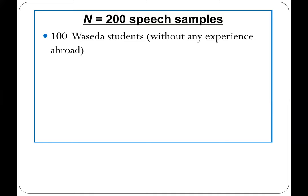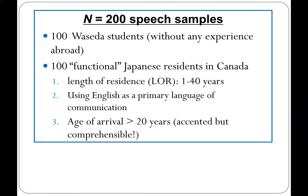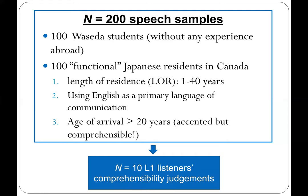The first hundred speakers came from my own university students back in Japan — they had never been abroad. The other hundred participants came from Japanese residents in Canada, chosen specifically because I consider them to be a good role model as functional Japanese users of English. All of them had been in Canada at least one year, all the way up to 40 years. Very importantly, they were regular users of second language English, reporting English as their primary language of communication. Also crucially, they came to Canada after the age of 20, meaning all of them spoke second language English with Japanese accents.